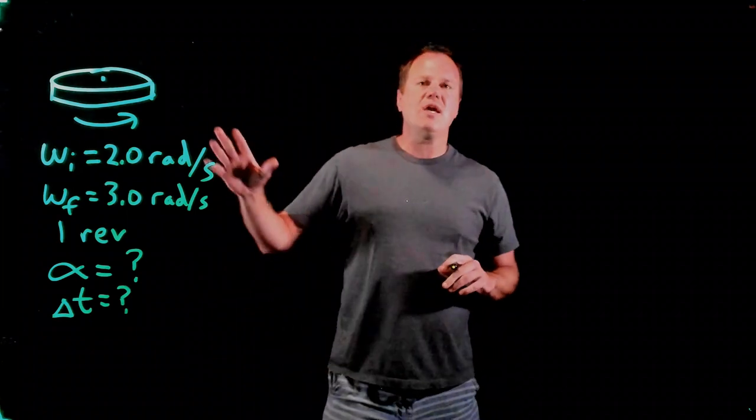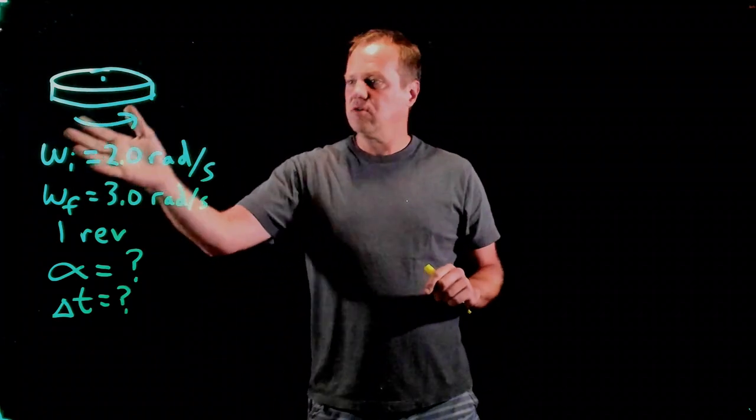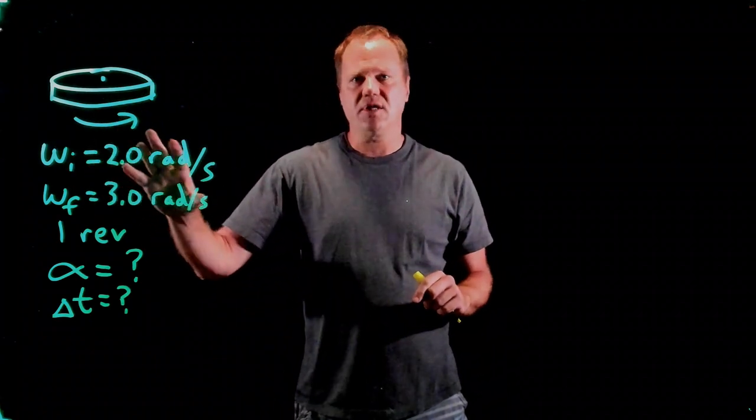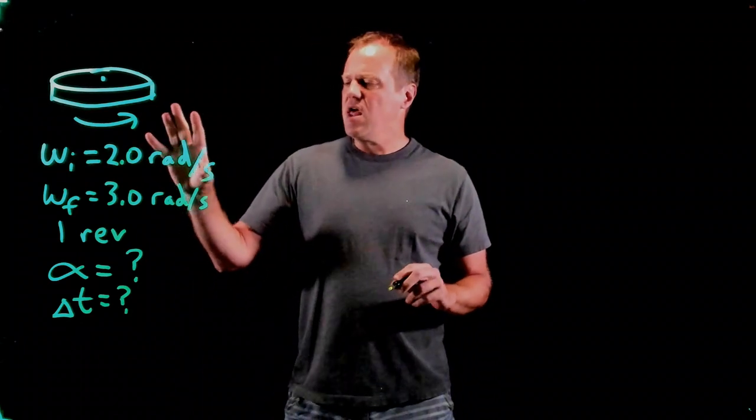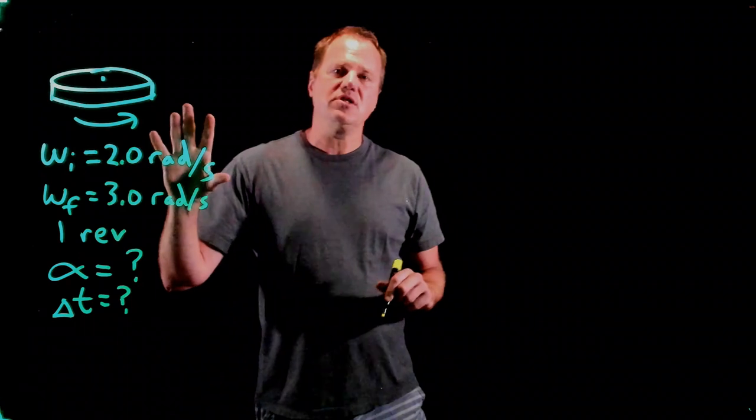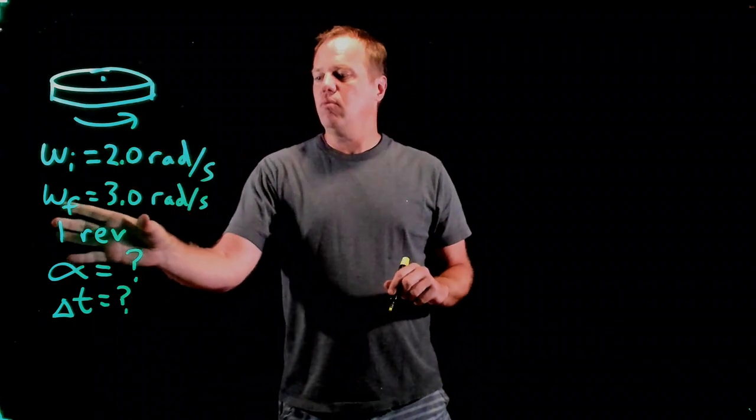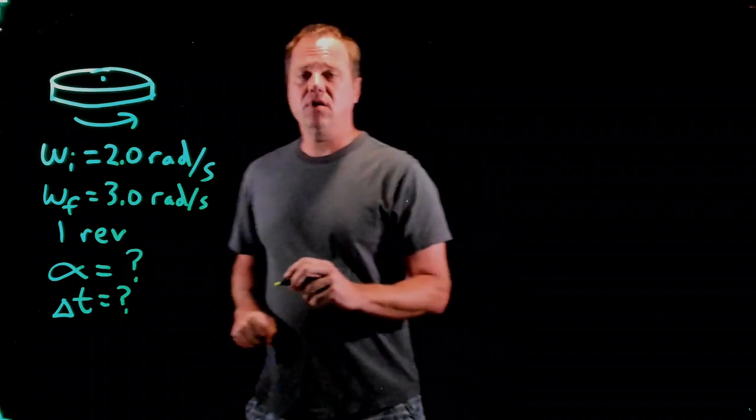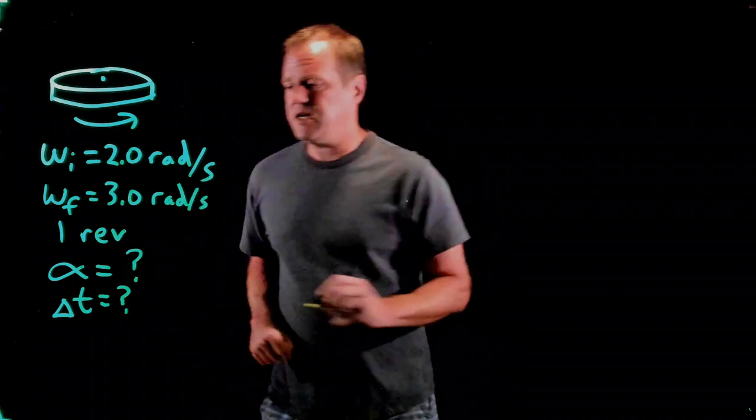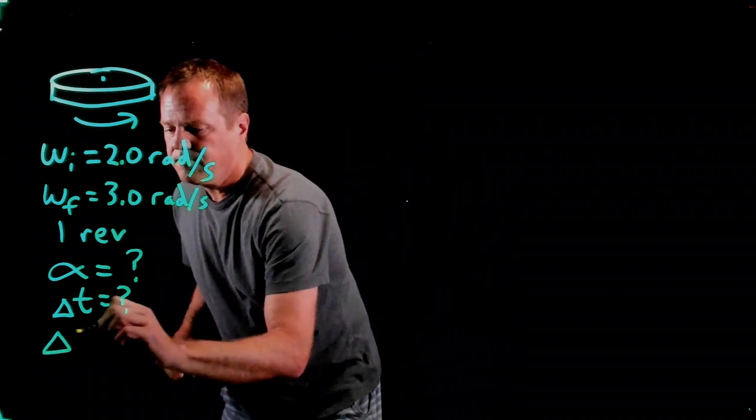Okay, so the initial angular velocity and final angular velocity are already in the SI units of radians per second. So our angular displacement is not. Revolutions are not SI units. So let's go ahead and convert that first to the SI units of radians.